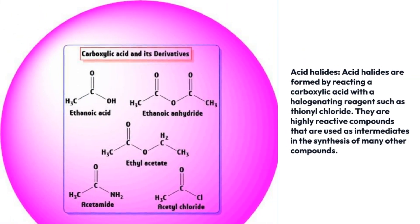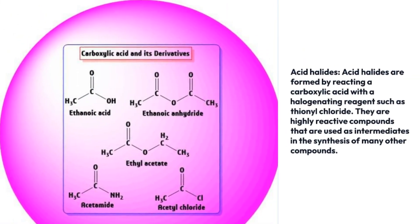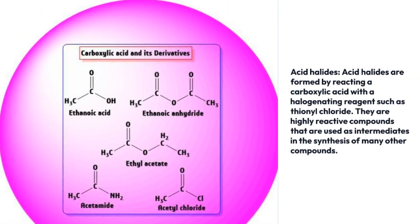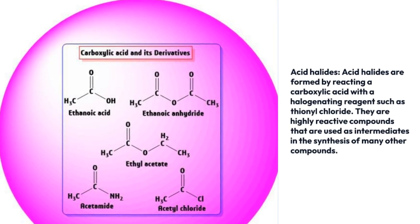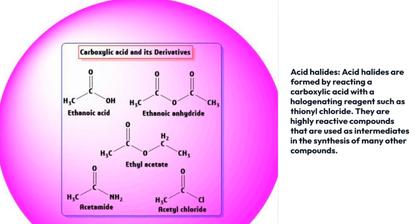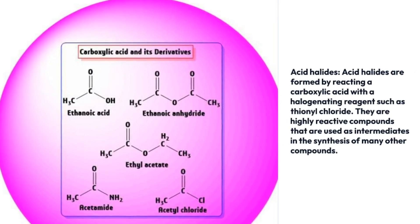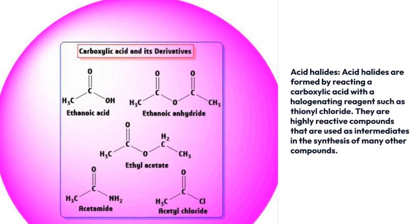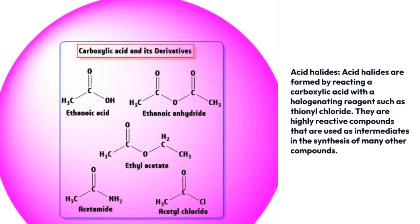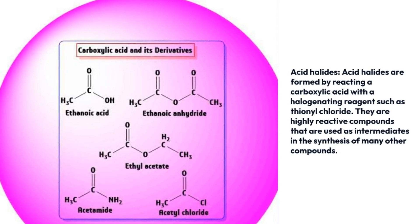Acid halides are formed by reacting a carboxylic acid with a halogenating reagent such as thionyl chloride. They are highly reactive compounds that are used as intermediates in the synthesis of many other compounds.